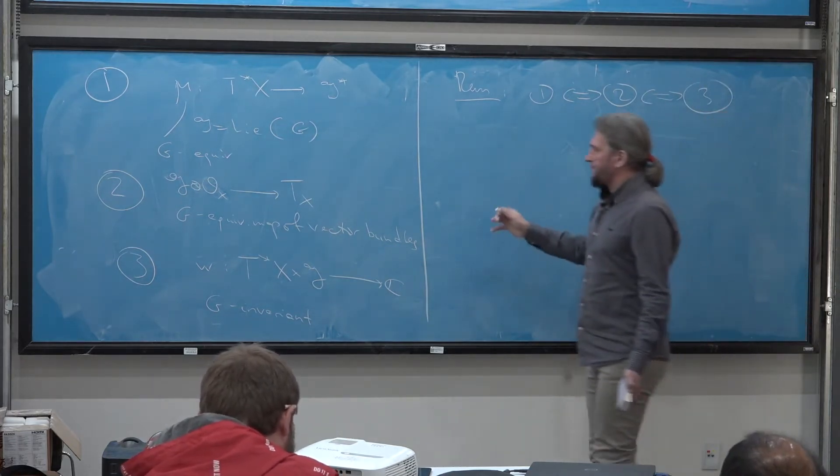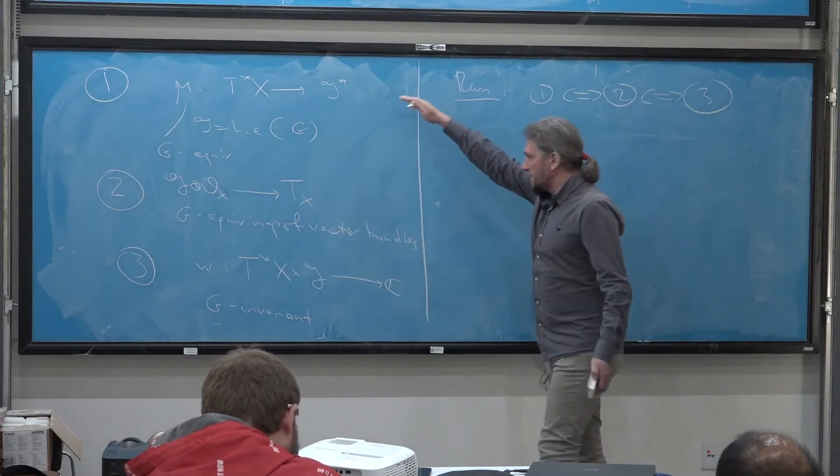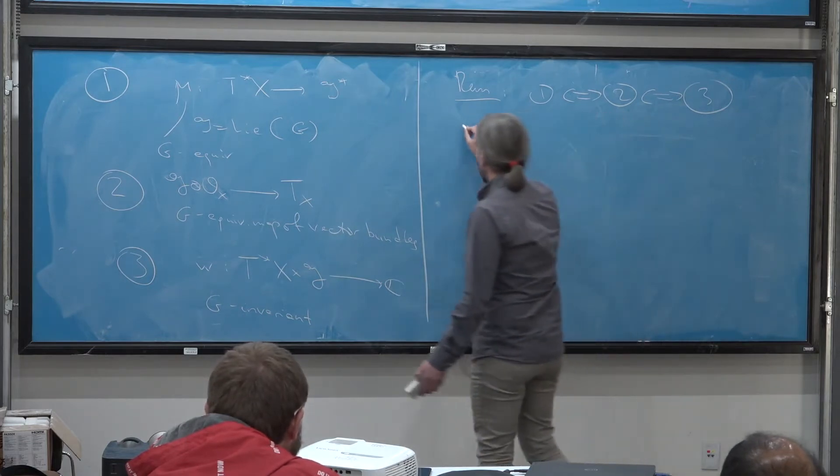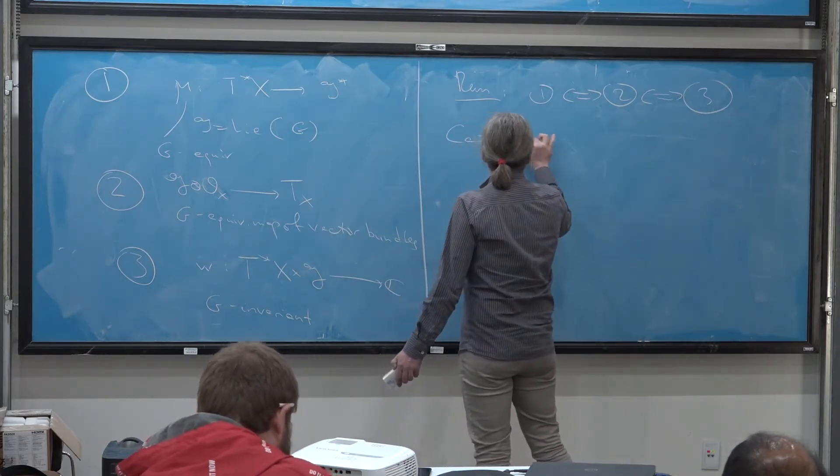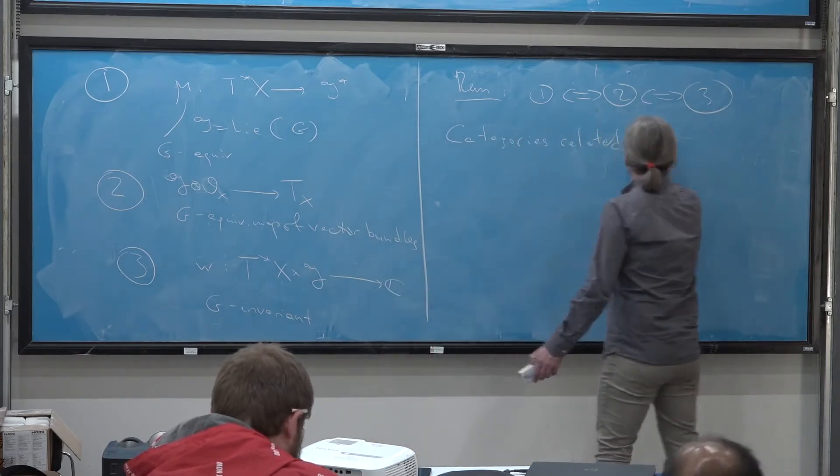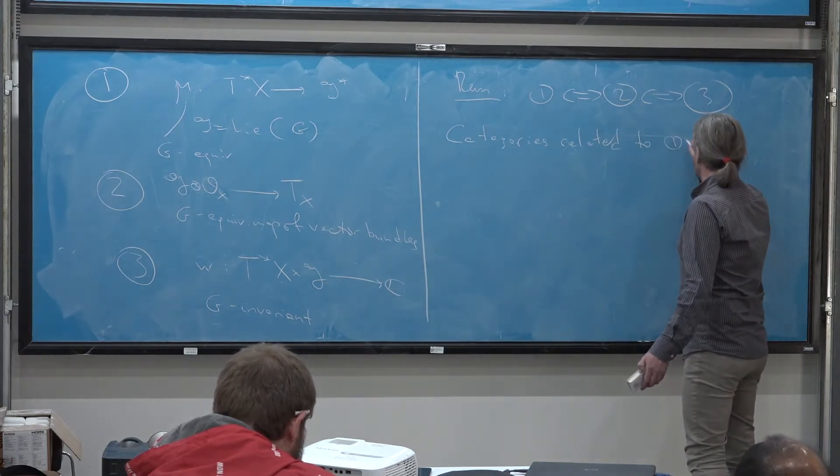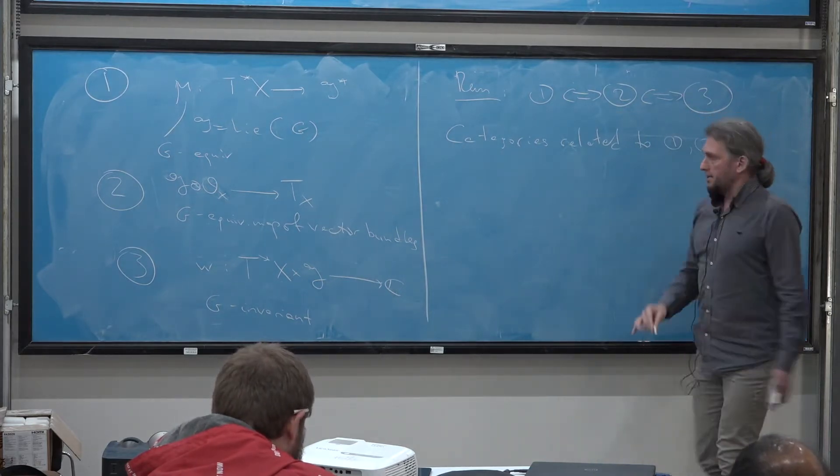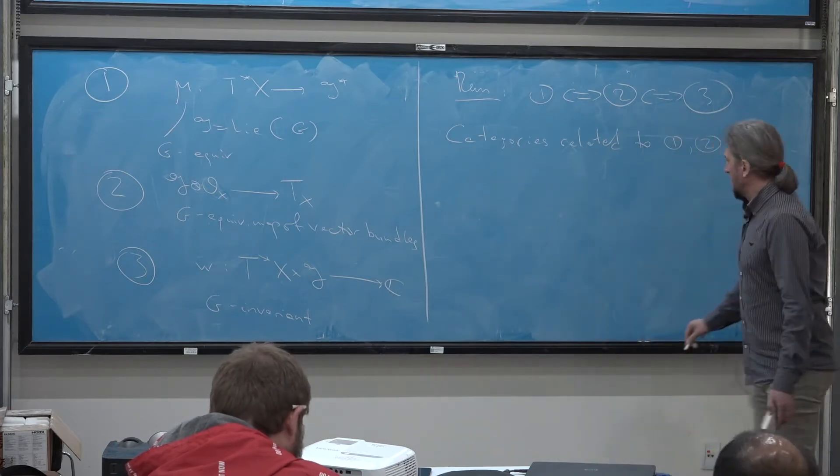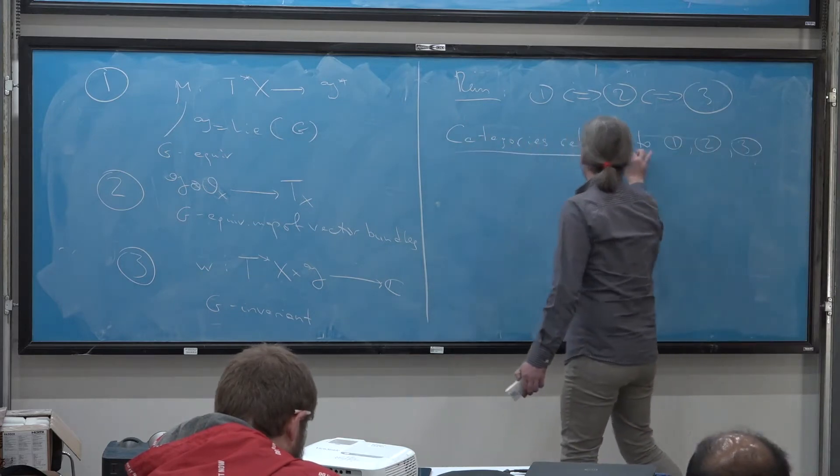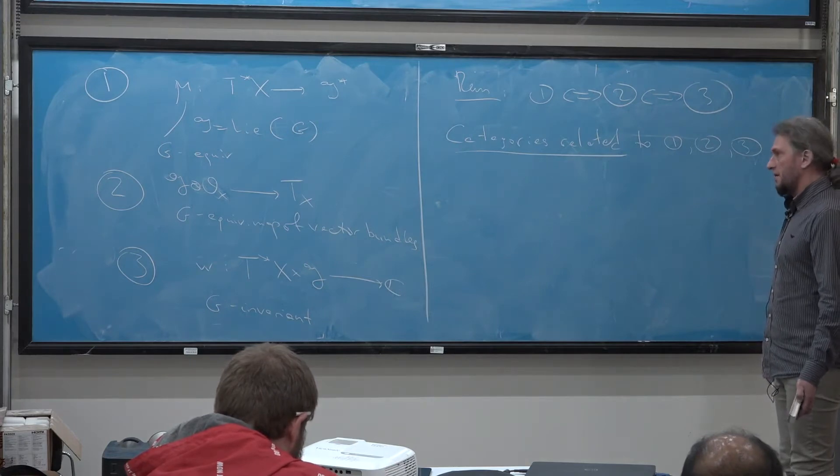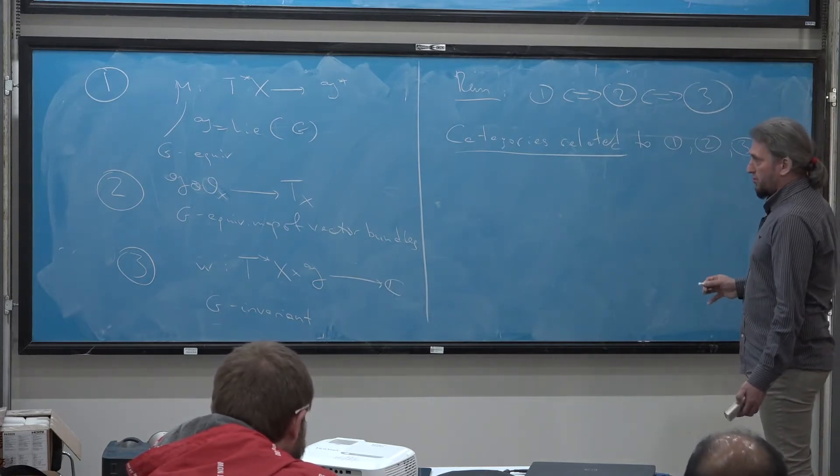Now, to be short, each of these realizations of moment map produces a category. So categories related to one, two, and three. And the spoiler is that the categories will be also equivalent. And it's an earlier result of my former graduate student, Tina Kanstrup, who is now a postdoc in the States.